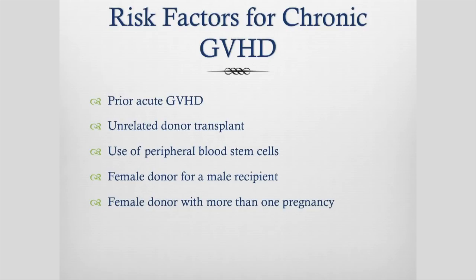Risk factors for chronic graft versus host disease include having had acute GVHD in that first three months after your transplant, having an unrelated donor transplant, having stem cells collected from the peripheral blood rather than the bone marrow — because there are more T-cells in peripheral blood — a female donor going into a male recipient, and a female donor who has had more than one pregnancy, because that donor has been exposed to other immune systems through her pregnancies and her immune system is a little bit more active.